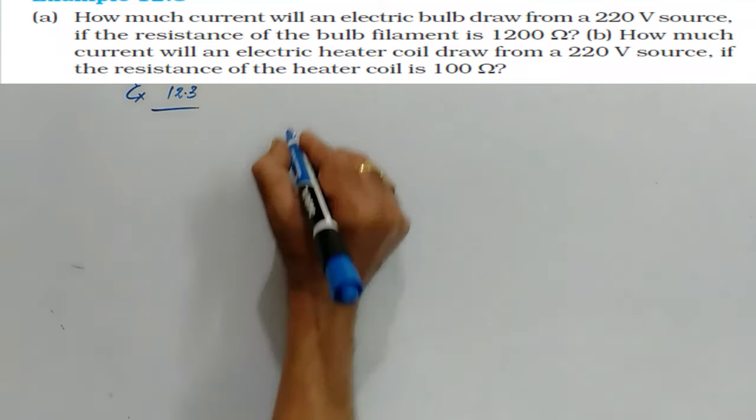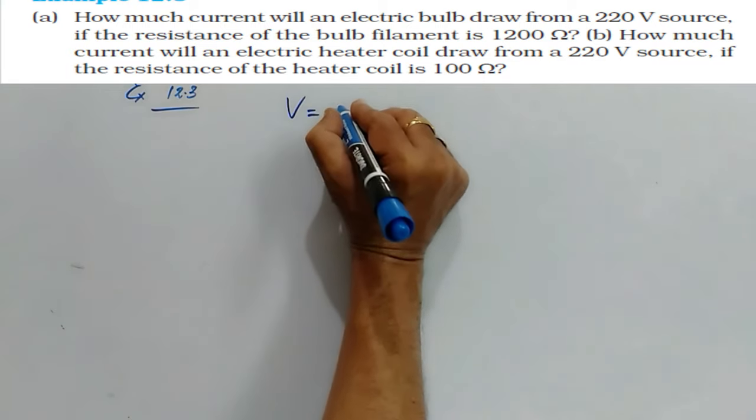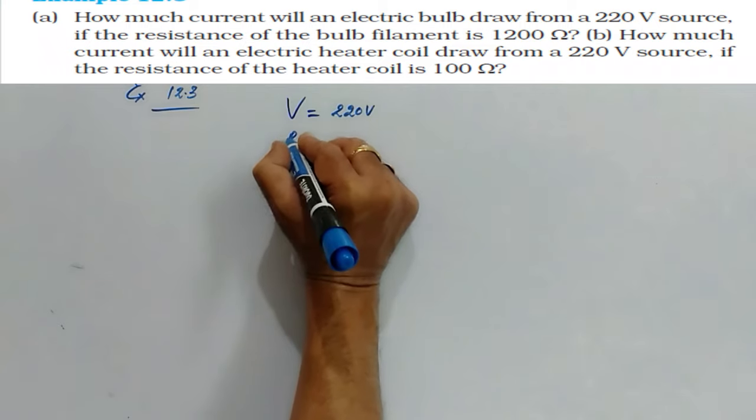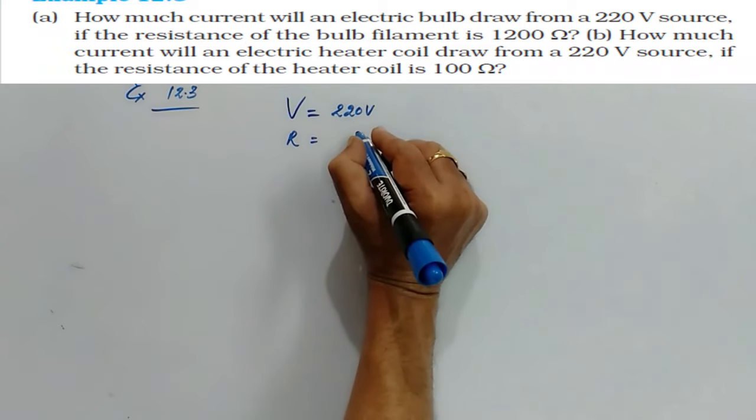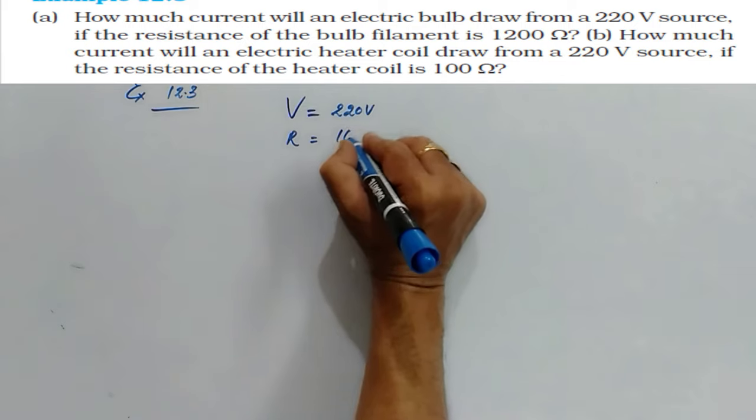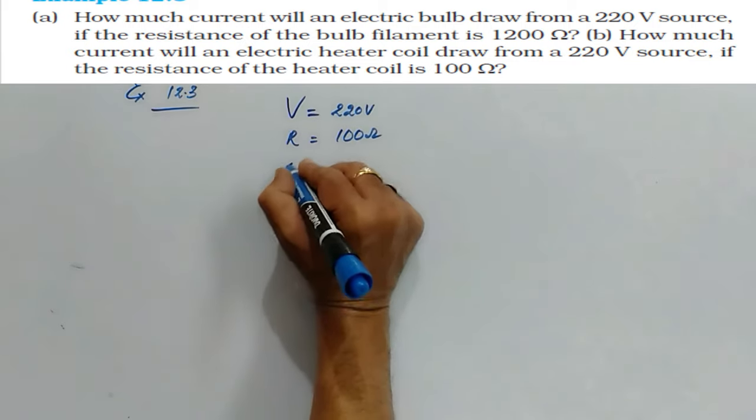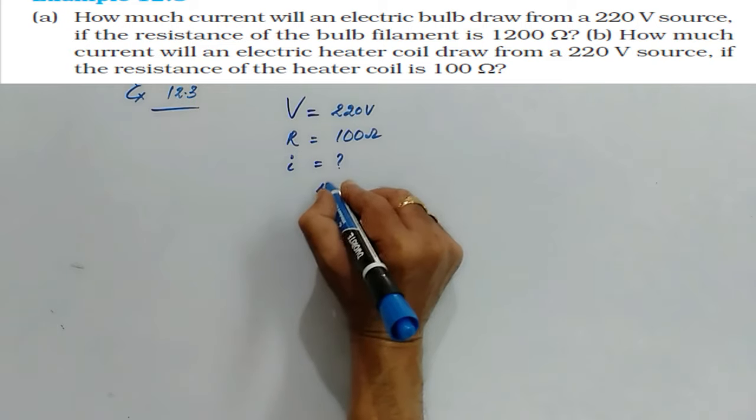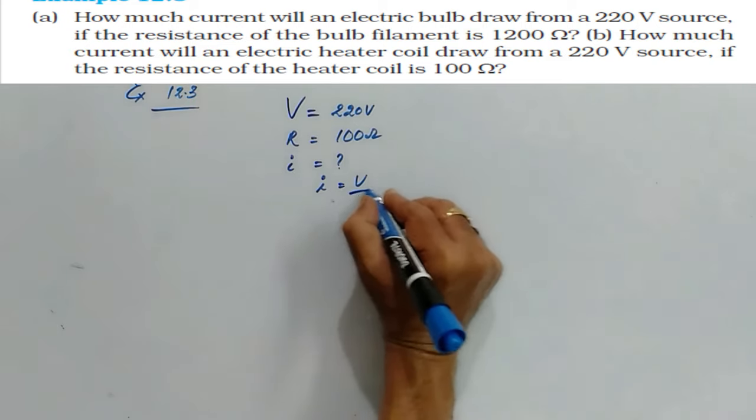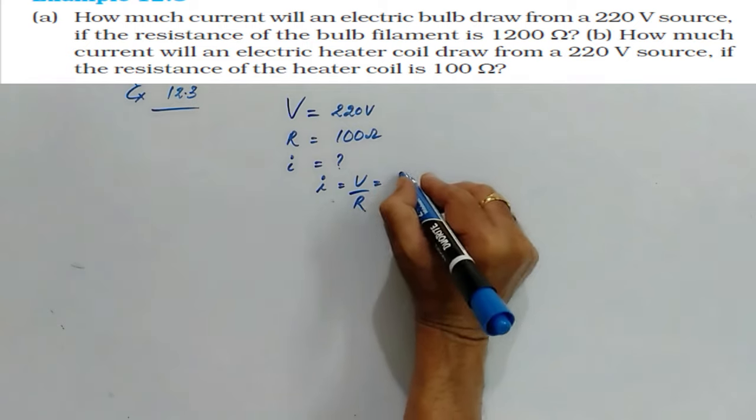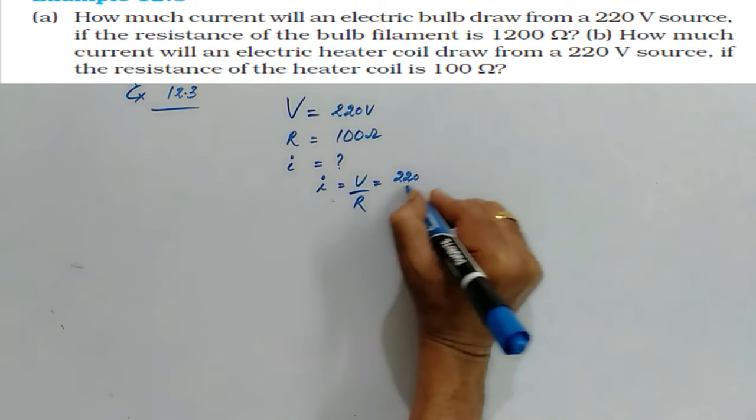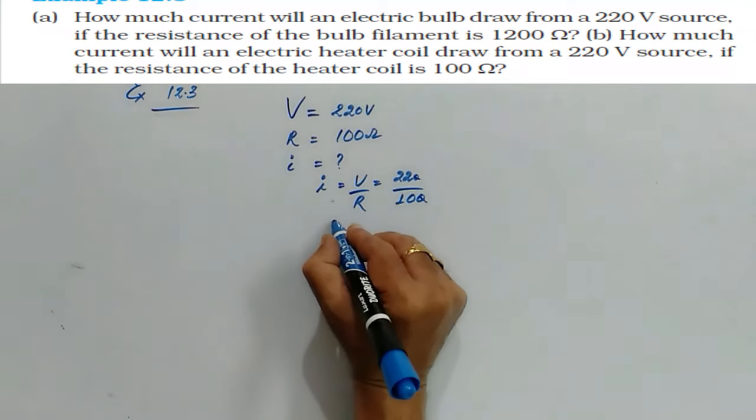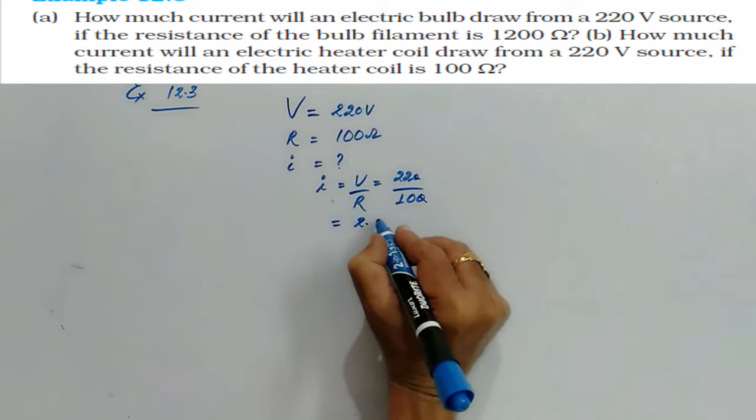In the second part, V is same, 220 volts. Resistance of the heater coil is given as 100 ohms, and I is asked. Again we will write the same formula: 220 divided by 100. So this is going to be 2.2 amperes.